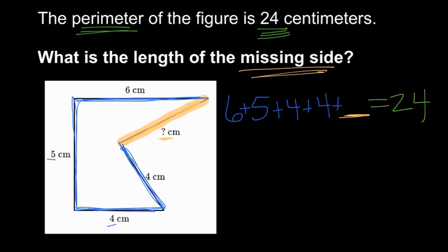So let's add over here and try to make it a little simpler to find our missing side. I can add in any order and I love making tens, so I'm gonna say six and four is ten. Ten plus five is 15, and 15 plus four more is 19. So we know where 19 centimeters come from on this shape.